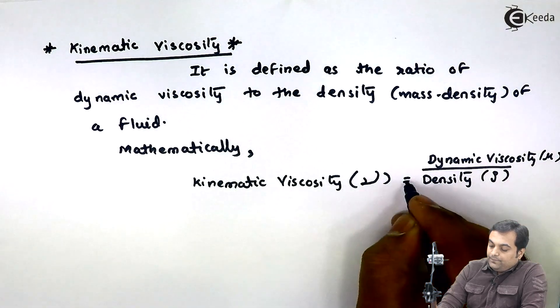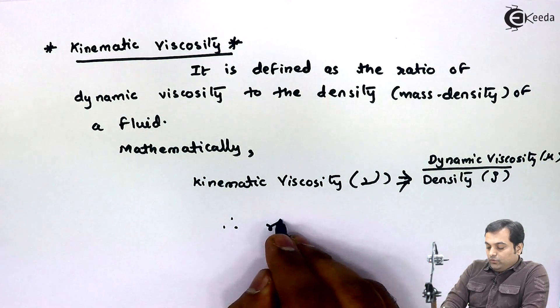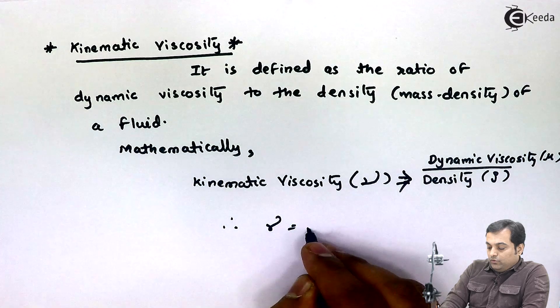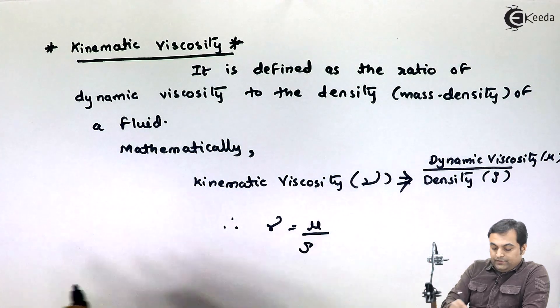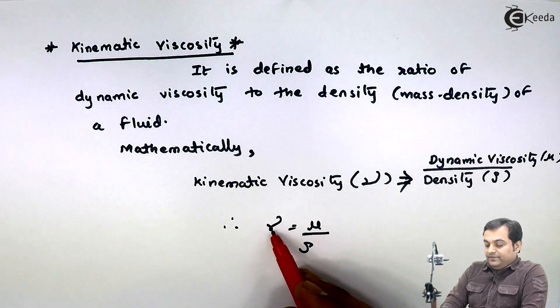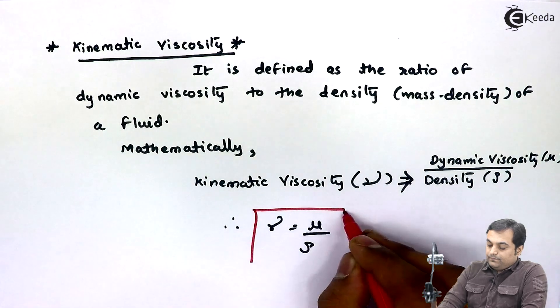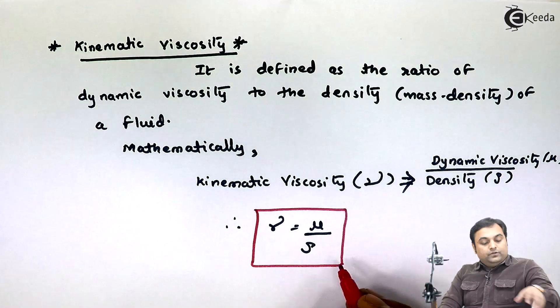μ (mu) upon density. So therefore ν will be equal to μ upon ρ. So here I am also seeing the relation between kinematic viscosity and dynamic viscosity.